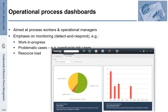Here you see an example of such an operational process dashboard as provided by Bizagi. On the left-hand side, we see the status of different cases: 57% are on time, 39% are at risk, and roughly 3.5% are already overdue. On the right-hand side, we get more information on how cases that went overdue are distributed over time — you can see that on certain days in March there are more cases than on others.